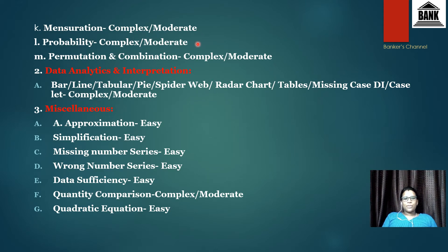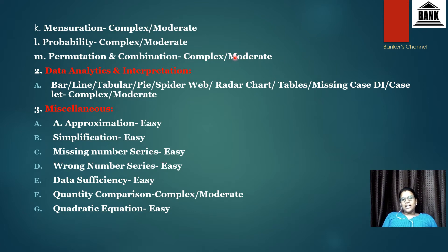Next one is probability — it's a moderate topic, and sometimes you can expect four to five questions in data interpretation form in a complex manner. Next is permutation and combination, which is easy to moderate, but sometimes in SBI PO and similar exams, this topic can also appear in data interpretation.